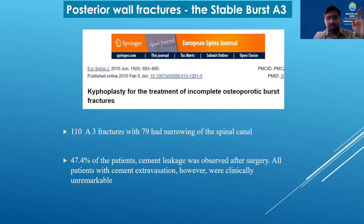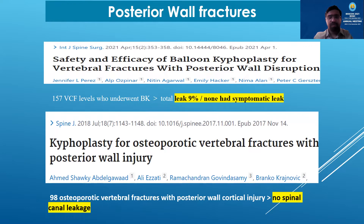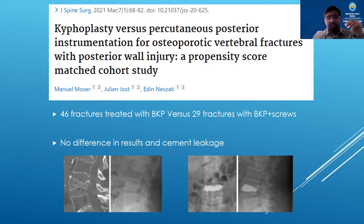Despite the high rate of cement leak, there was no clinically significant change in results. Another study by Perez et al. looked at 157 fractures with balloon kyphoplasty — not vertebroplasty — and had 9% spinal canal leak, but none were symptomatic. A further study with kyphoplasty in patients with posterior wall injury showed no spinal leak. Another study compared isolated kyphoplasty versus screw fixation plus kyphoplasty in fractures with posterior wall injury; both had clinically similar results. The technique and operator experience clearly make a difference with regard to cement leak.